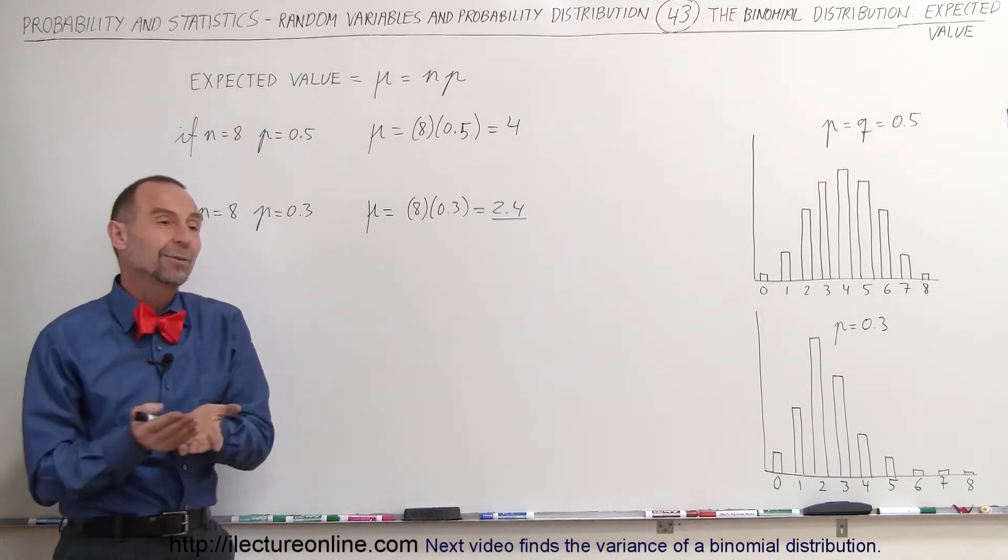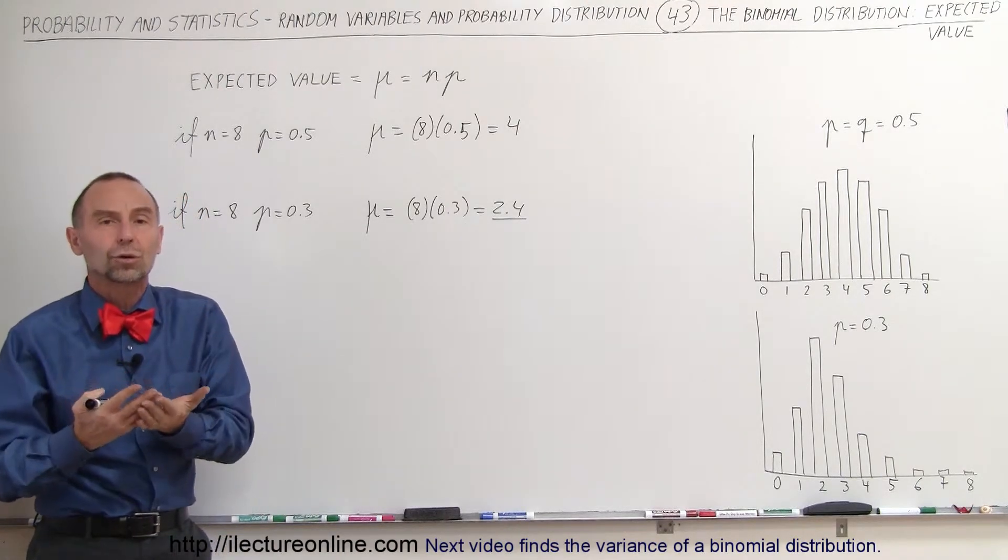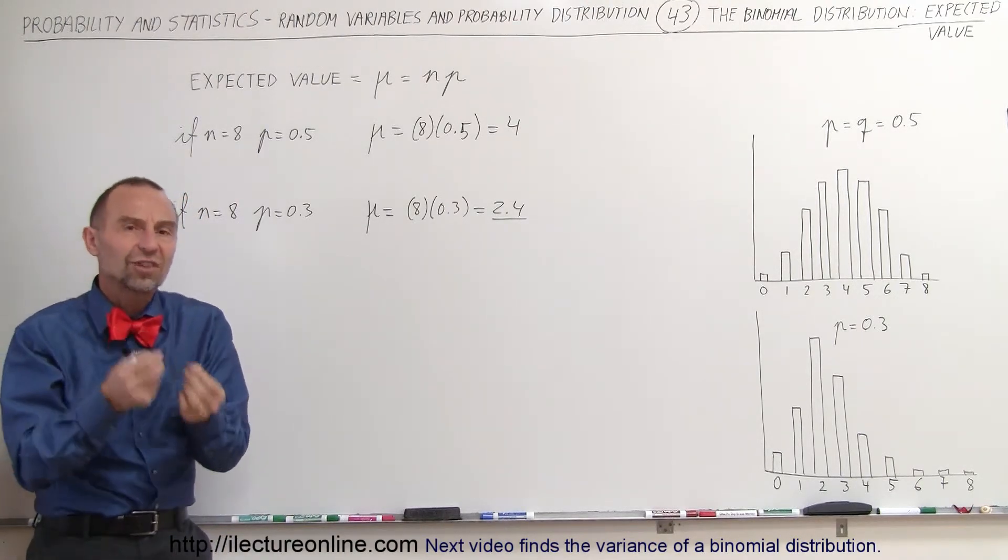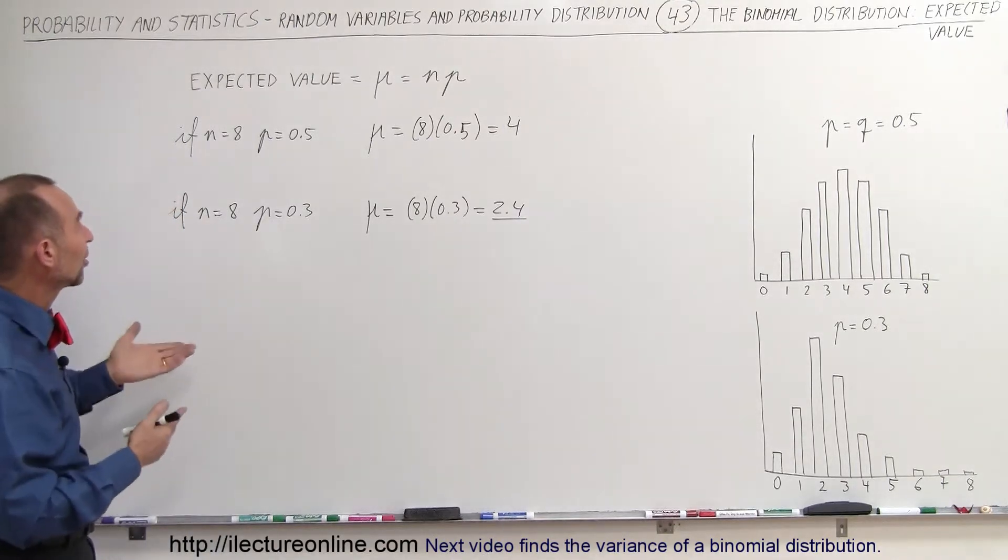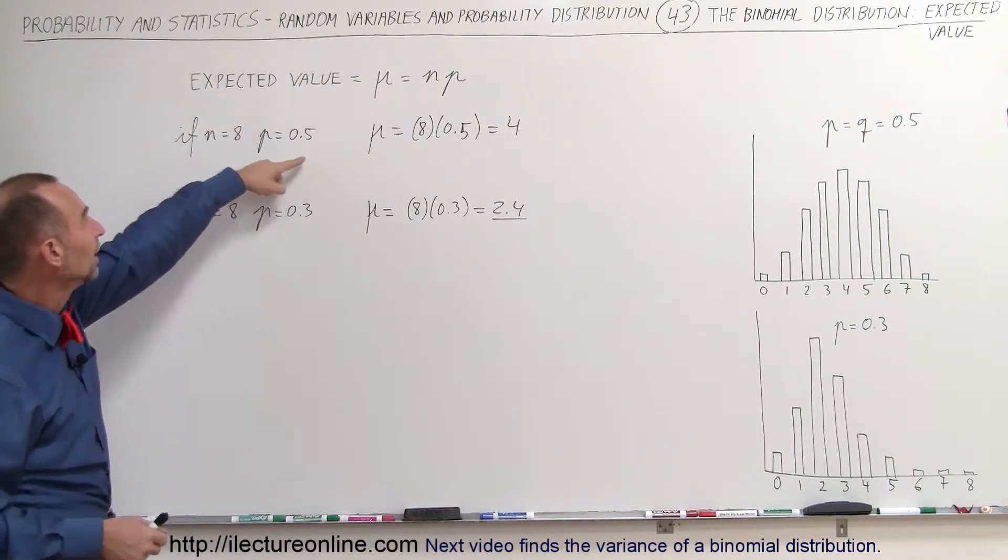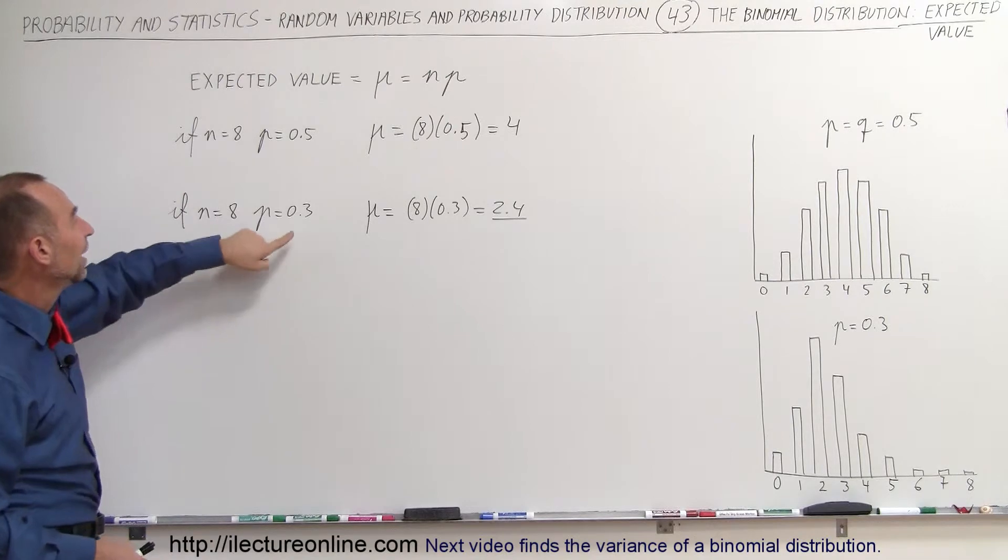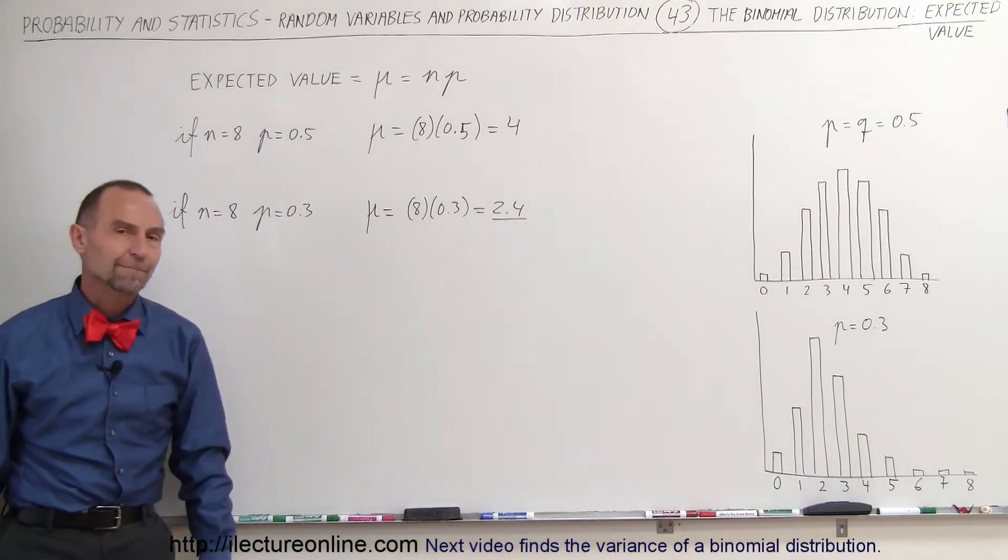And remember, the expected value simply is the value most likely to occur. In this case, the number of successes, and so the number of successes in this case would be four if P is equal to 0.5, and it would be 2.4 if P is equal to 0.3.